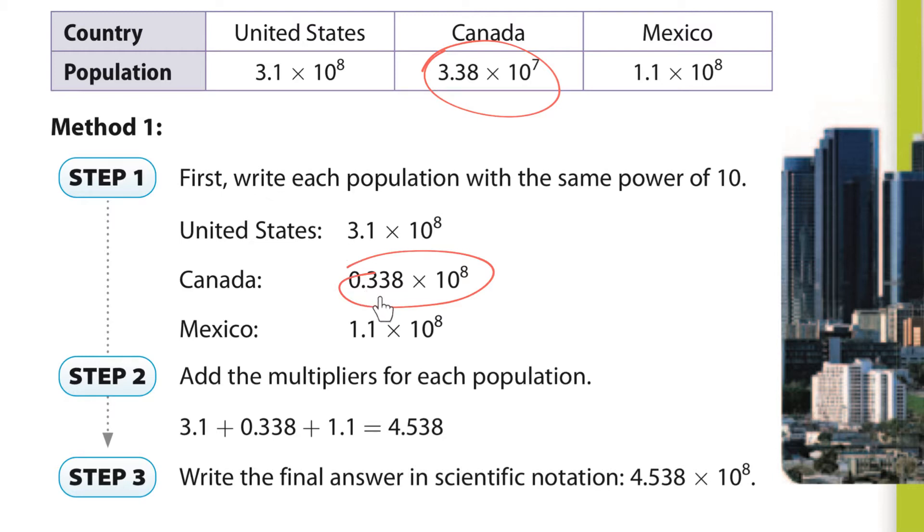So we add them all up. Add up 3.1, 0.338, and 1.1. Add them up and you have this. And then they're all to the power of 8. So there you go.